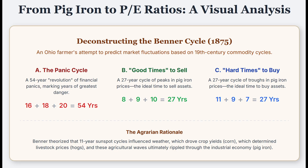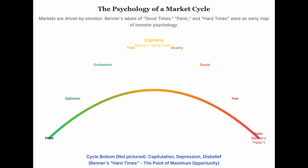He tied it all back to nature — sunspots. He noticed an 11-year cycle in corn and hog prices, with peaks alternating every five and six years, matching the sunspot cycle roughly. His theory was: sunspots affect weather, weather affects crops, crops affect prices, prices ripple through the economy hitting pig iron, causing the big cycles. A whole chain reaction starting from the sun.